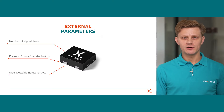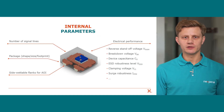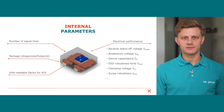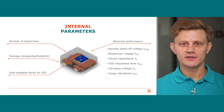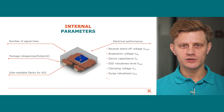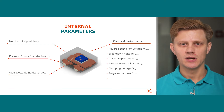After the exterior, let's take a look at the interior. Here, working and breakdown voltages, device capacitance, as well as the ESD robustness itself are the main parameters. For system level protection you must compare the clamping voltages, which should be as low as possible in your specific application.